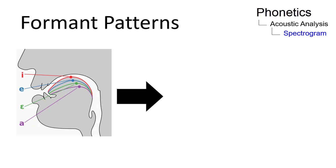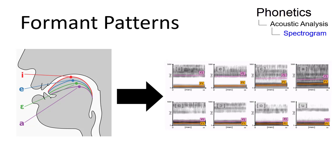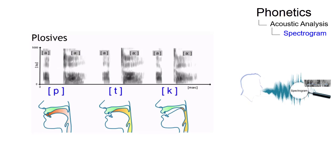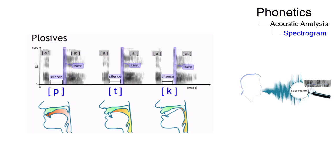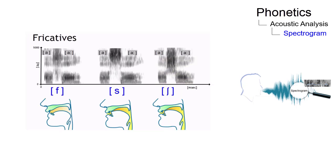Different vocal tract shapes will produce different formant patterns. Their unique patterns enable us to distinguish vowels from one another and help us to identify adjacent consonants. For example, plosives are visualized as a great burst of energy across all frequencies after relative silence. Darkness occurring across a wide frequency section indicates turbulent airflow, thus implying a fricative or affricate.